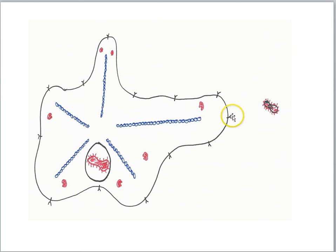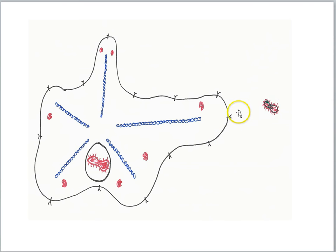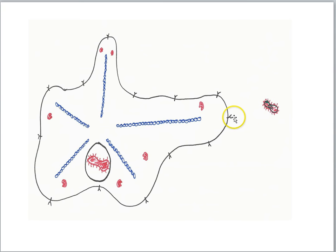Here's where the receptor proteins might come into play. After all, the ones in this part of the amoeba are positioned nearest to the prey. What if they could detect some kind of chemical from the prey, and in detecting that chemical could block the choppers?